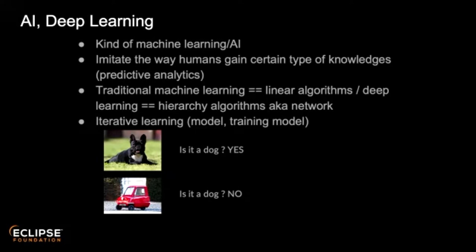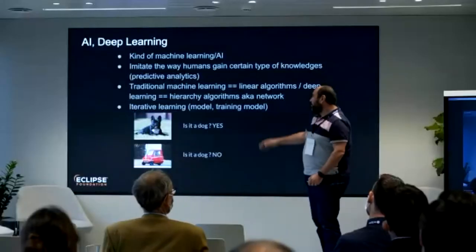A classic example is an image recognition system. You say, okay, is this a dog — yes or no? And thanks to that, you can train the model depending on what you submit.